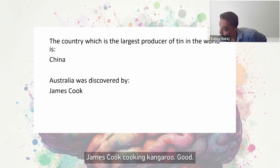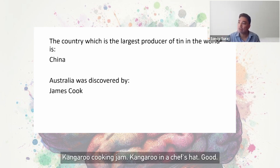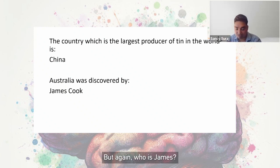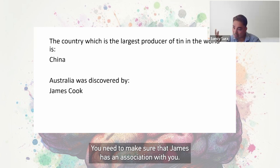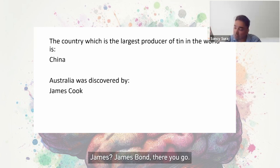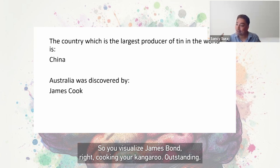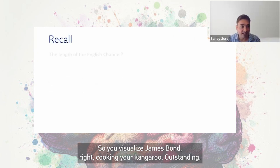Australia was discovered by James Cook. A kangaroo cooking jam, or a kangaroo in a chef's hat — good. But how do you know it's James and not Peter or Tom? You need an association for James. James Bond — so visualize James Bond cooking your kangaroo. Outstanding.